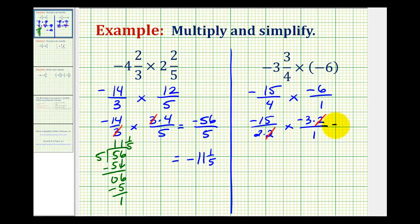Now we can go ahead and multiply. A negative times a negative is positive, so negative fifteen times negative three is positive forty-five. Our denominator is two times one, or two. This is our product as an improper fraction, in simplest form.